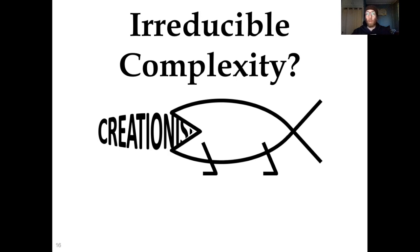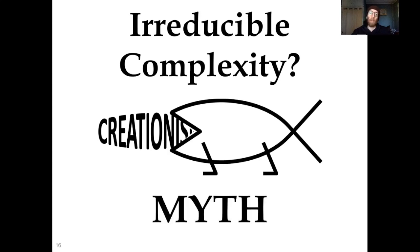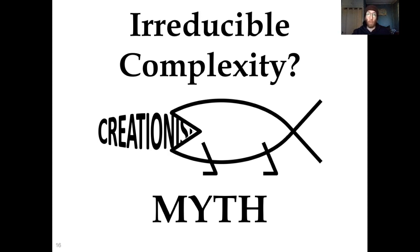So, is irreducible complexity a viable argument against evolution? Nope. That is a creation myth, and going all the way back to 1996, it's an oldie but a goodie. It's fun to hit the wayback machine once in a while instead of responding to what somebody said last week. So anytime irreducible complexity comes up as an anti-evolution argument, now you know why it is wrong, and you can refute it. Thank you for watching. I hope you enjoyed. Remember everybody: don't get fooled.